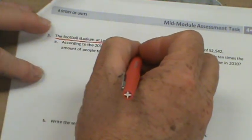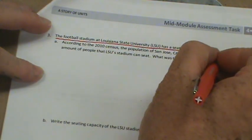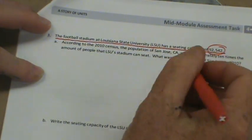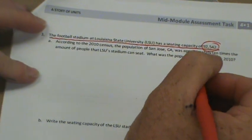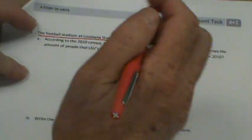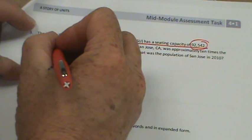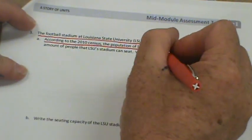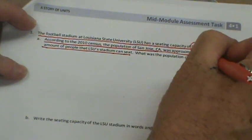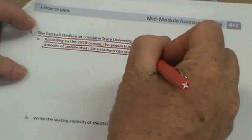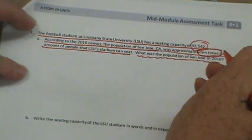Let's turn the page. The football stadium at Louisiana State University LSU has a seating capacity of 92,542. That means 92,542 people can sit in that stadium. So down here, according to the 2010 census, the population of San Jose, California was approximately ten times the amount of people that LSU Stadium can sit. So there's my ten times. What was the population of San Jose in 2010?